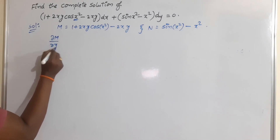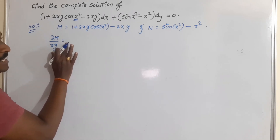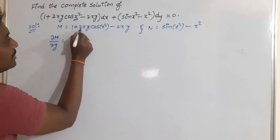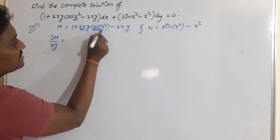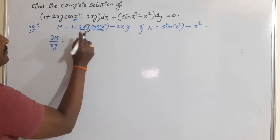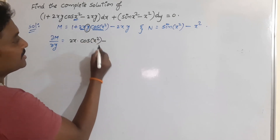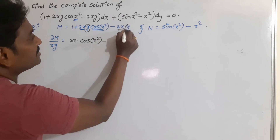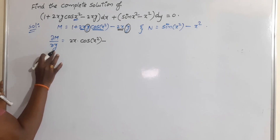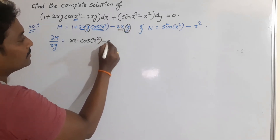∂M/∂y: the 1 is a constant term so its partial derivative is 0. After that, taking the partial derivative of M with respect to y, 2x is a constant term and cos(x²) is also a constant term. So it is enough to write the derivative of y with respect to y only, which is 1. So it would be 2x·cos(x²). Minus: here also 2x is a constant term, so the derivative of y with respect to y gives 2x·1 = 2x.